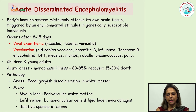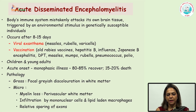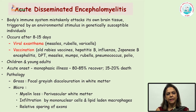Acute disseminated encephalomyelitis — the name itself tells you that it has an acute onset and it involves the CNS in a disseminated manner, meaning there is extensive involvement of the CNS, but dominantly the disease occurs in the white matter. What happens is that the body's own immune system starts attacking its own brain, triggered by an environmental stimulus, and most of these patients are genetically susceptible. It occurs primarily in young patients, mostly children and young adults, and the disease occurs after one to two weeks of insult.